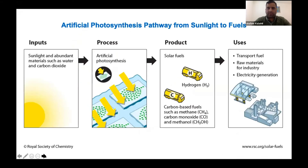We are learning whether we can exceed natural photosynthetic efficiency using alternative approaches. There is a technology called artificial photosynthesis, which mimics the natural photosynthetic system by making an artificial leaf. The mechanism is very similar — taking sunlight, carbon dioxide, and water and converting them to fuel. One key advantage is that we can tune the product: if you want ethanol, you can make ethanol; if you want methanol, butanol, or whatever, you can tune the final product.